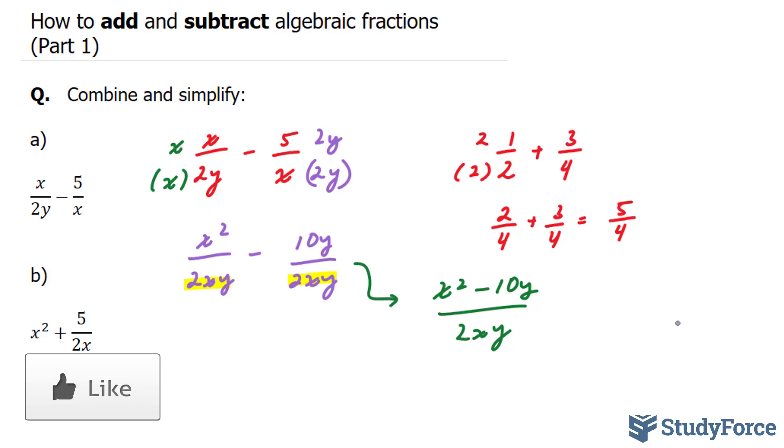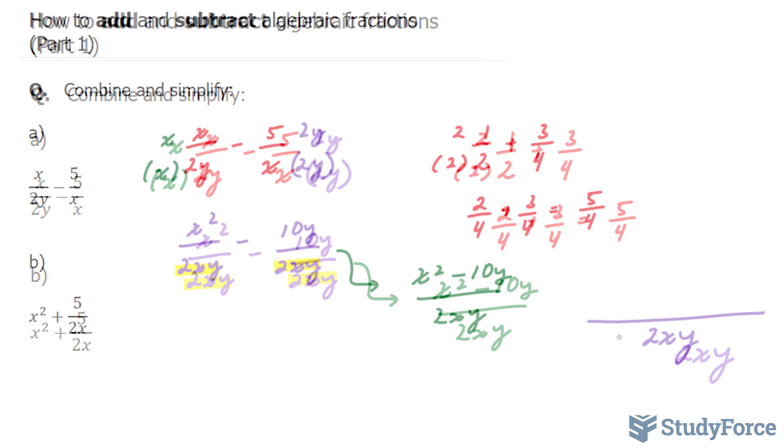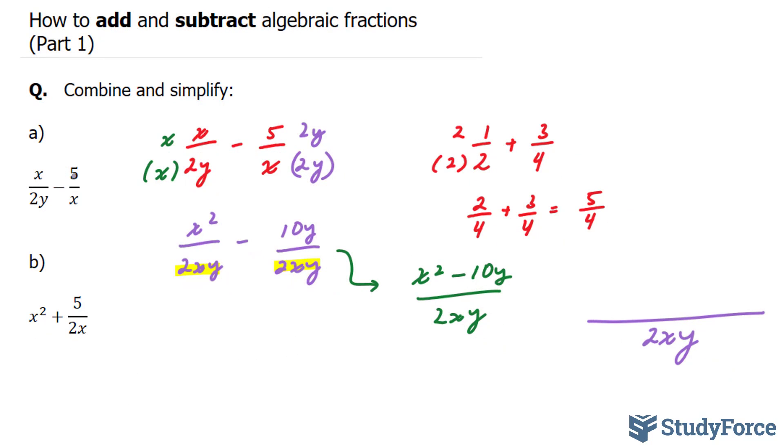For example, 2y times x is equal to 2xy. And this denominator, multiplied to this 5, gives us negative 10y, because 2y times negative 5 is negative 10y. And you can write that here or here, I'll write it here, negative 10y. And similarly, x times x is equal to x squared, and you can write that here. And you'll end up with the same solution.